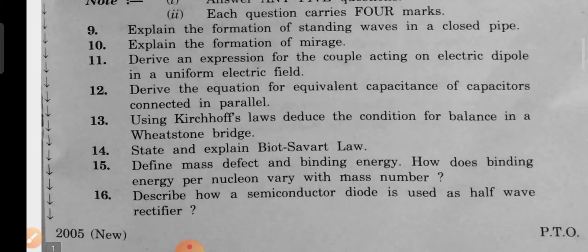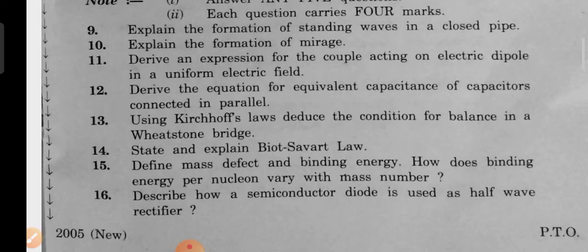Section B questions: Explain the formation of standing waves in a closed pipe. Derive an expression for the couple acting on an electric dipole in a uniform electric field. Derive the equation for equivalent capacitance of capacitors connected in parallel using Kirchhoff's laws. Derive the condition for balance in a Wheatstone bridge. State and explain Ohm's law. Define mass defect and binding energy. How does binding energy per nucleon vary with mass number? Describe how a semiconductor diode is used as a half-wave rectifier.